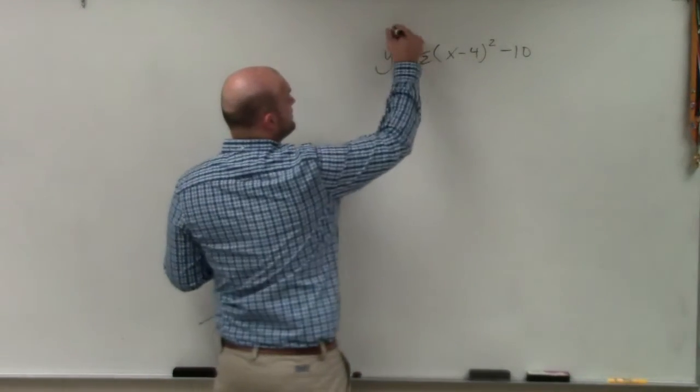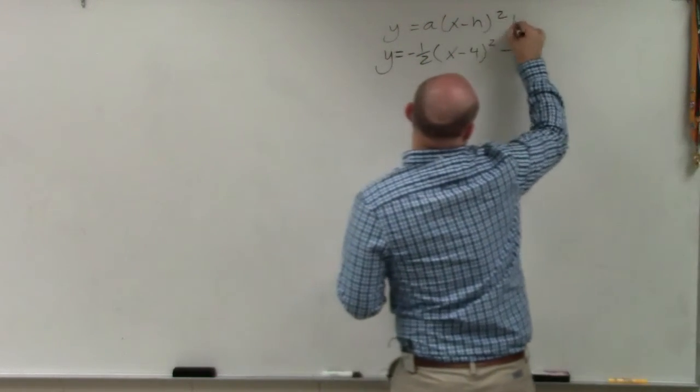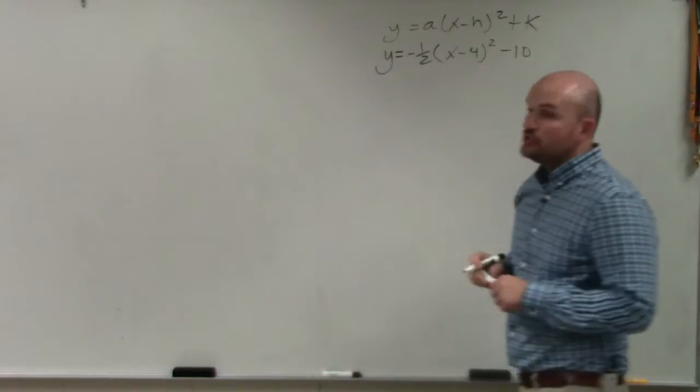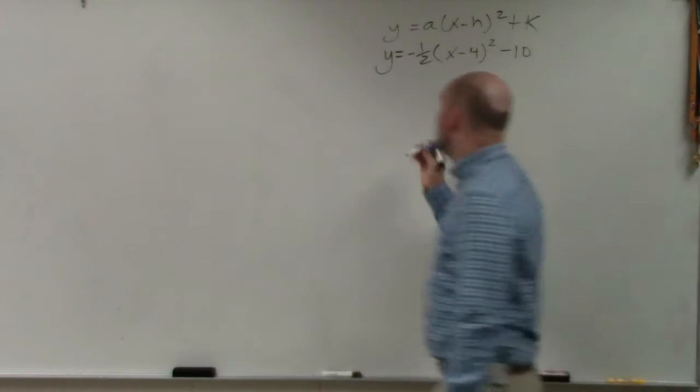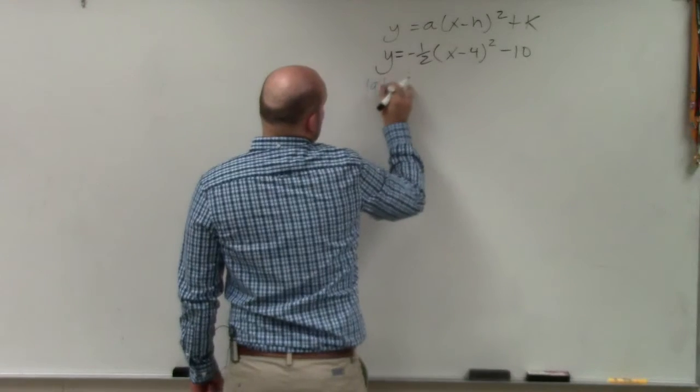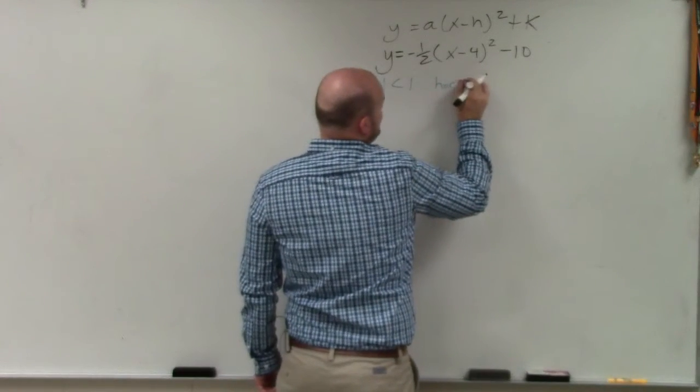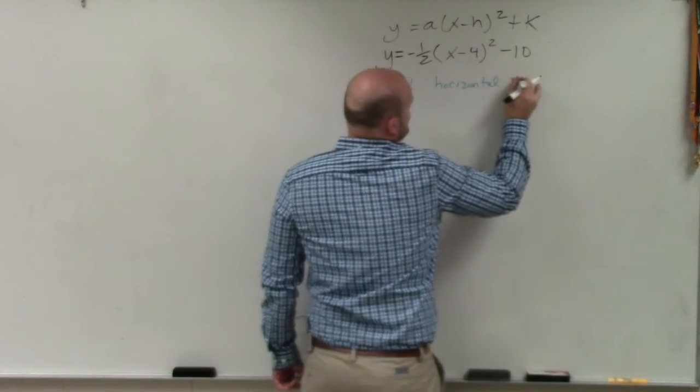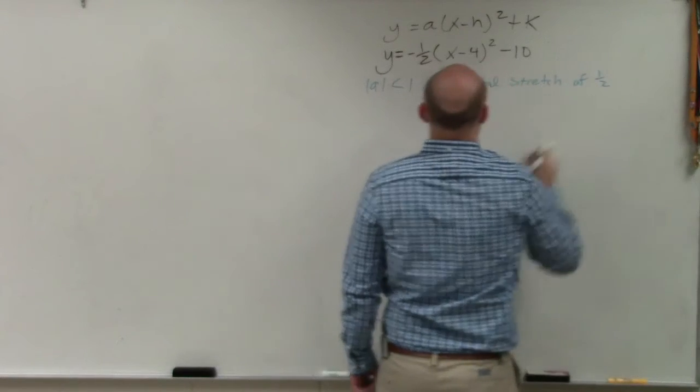Basically, ladies and gentlemen, the main important thing is we need to understand what are our transformations. You can see we have an a, we have an h, and we have a k. The absolute value of a is less than 1, therefore there's a horizontal stretch of 1 half.